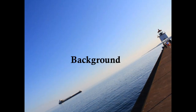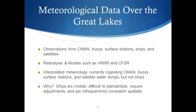First, the background. Meteorological data in the Great Lakes mostly consists currently of observations from NOAA or Coast Guard stations, buoys, surface stations, ships, and satellites. We also use reanalysis and models such as HRRR and CFSR for other data sources, and also interpolated meteorology, which ingests the NOAA stations, buoys, surface stations, and satellite water temperatures, but currently not ships.